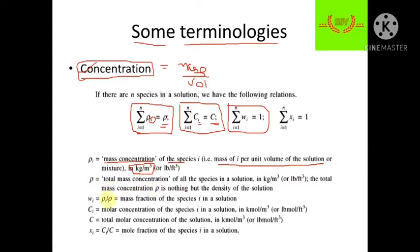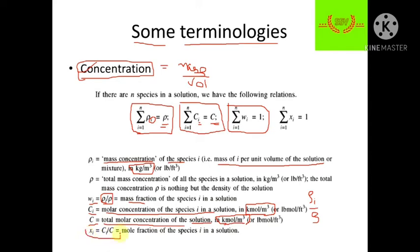w_i, the mass fraction, is defined as rho_i divided by rho, that is the density of the ith component divided by the total density. Similarly, c_i is the molar concentration of species i, and C is the total molar concentration of the solution, both in kilo mole per meter cube. x_i is the mole fraction, defined as the concentration of the ith species divided by total concentration C. You should remember four terms: w_i, c_i, rho_i, and x_i.